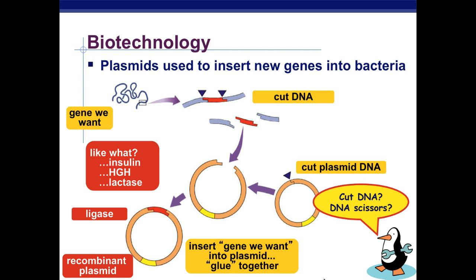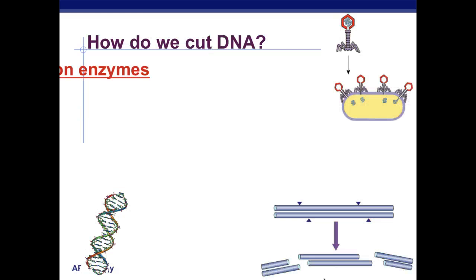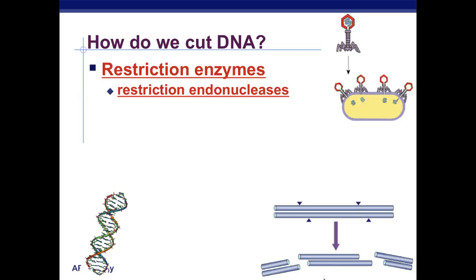Cut DNA — DNA scissors — that's what we're going to talk about next. I mentioned ligase, which is going to glue it back together. But we need to figure out how we're going to cut the DNA to get the genes we want. So how do we cut DNA? We use something called restriction enzymes, also known as restriction endonuclease — meaning inside the nucleus.